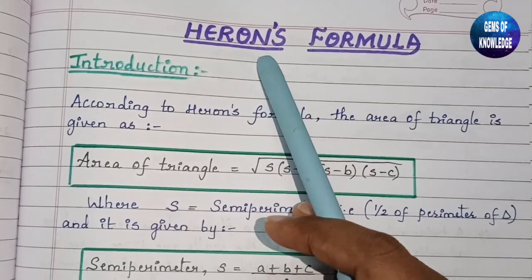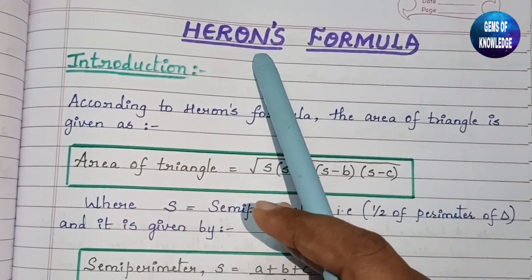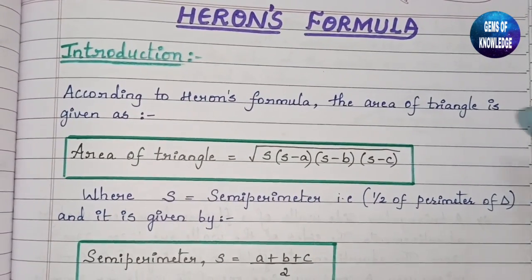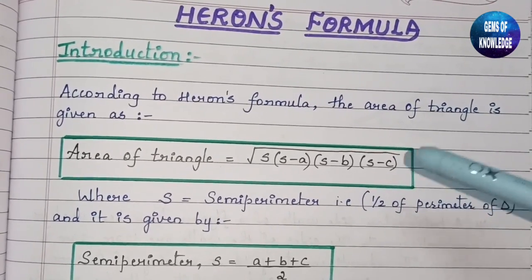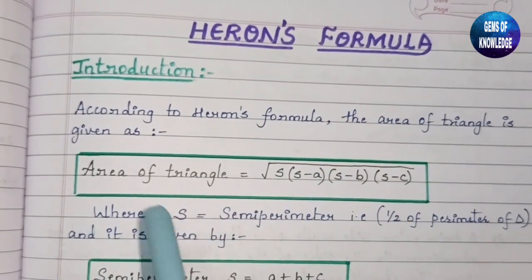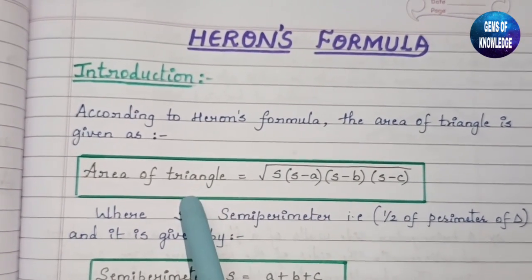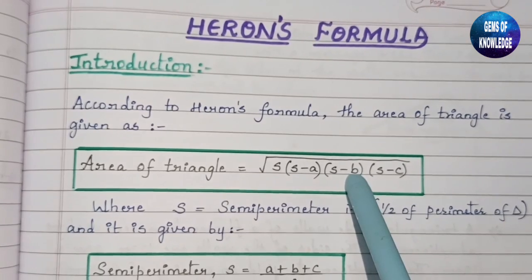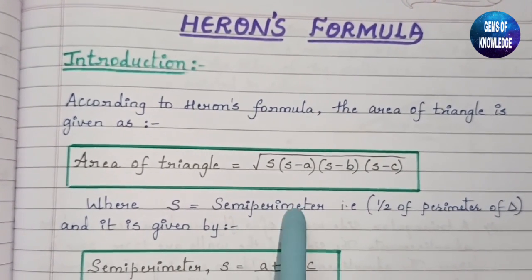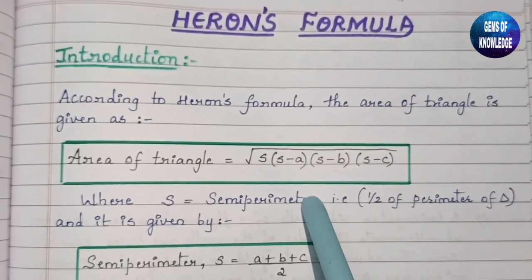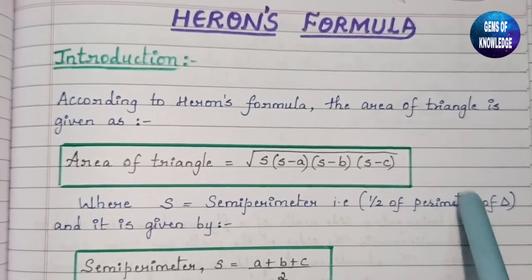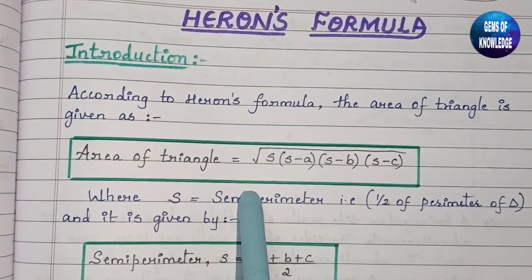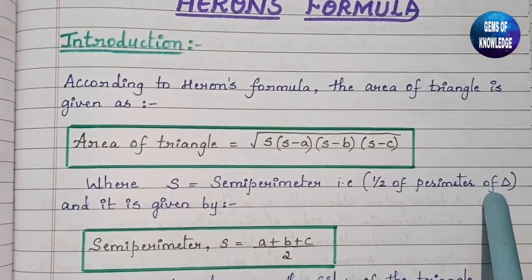For the introduction of this chapter, the topic is Heron's Formula. Heron is a mathematician who has given a formula for the area of a triangle. We all know the area of a triangle is half into base into height, but Heron's formula states: area of triangle equals root of S into (S minus A) into (S minus B) into (S minus C), where S is called the semi-perimeter — that is, half of the perimeter of the triangle.